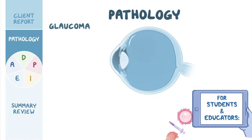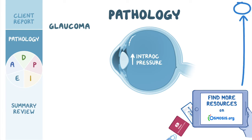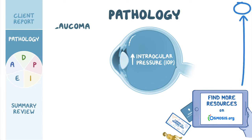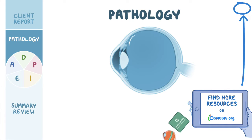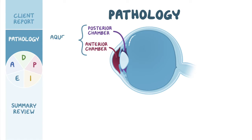Glaucoma refers to a group of eye conditions that are associated with increased pressure in the eye, referred to as intraocular pressure, or IOP. Before we proceed with glaucoma, let's take a look at a cross-section of the eye. On one side of the lens, we have anterior and posterior chambers filled with the fluid aqueous humor, while on the other side, we have the vitreous body filled with the gel-like vitreous humor.